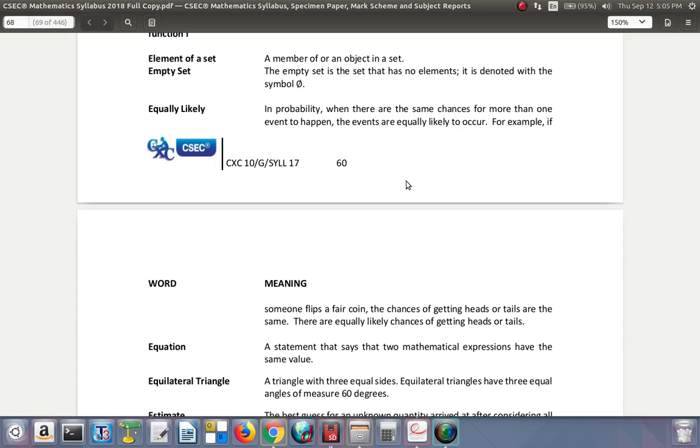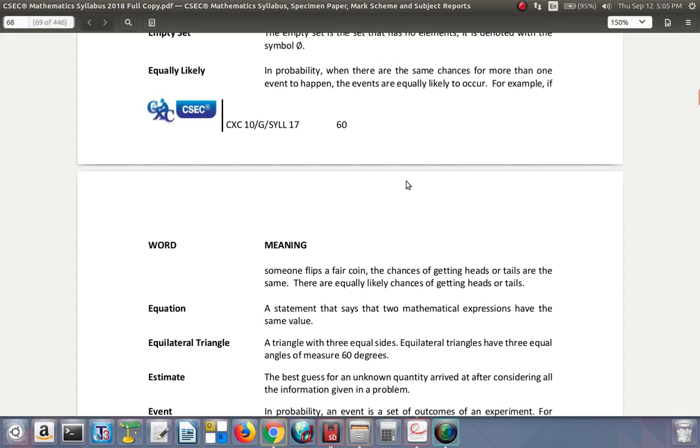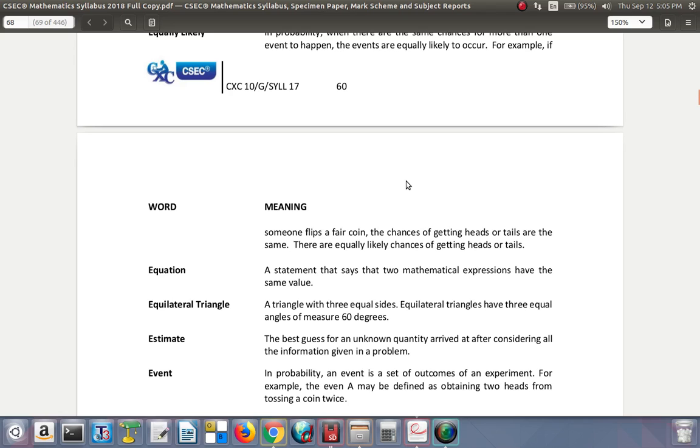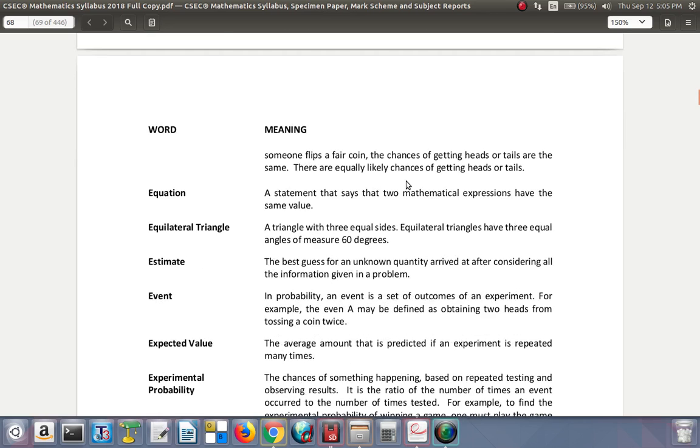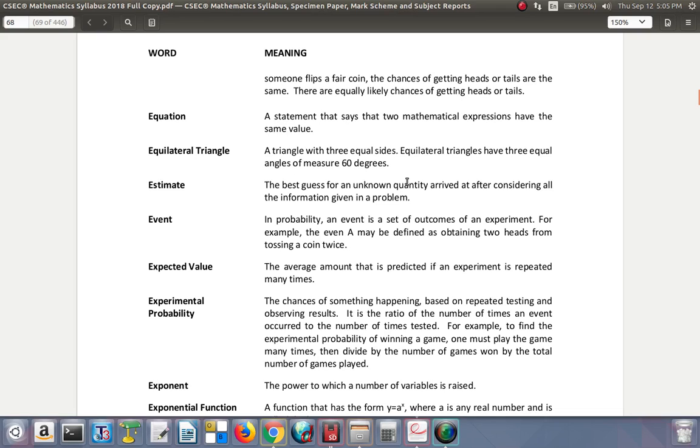There are equally likely chances of getting head or tail. The effective word there is fair, a fair coin. You don't spot weld something on one side of the coin or put some invisible glue on one side or bend it so that one side is more likely to play. It must be a fair coin.